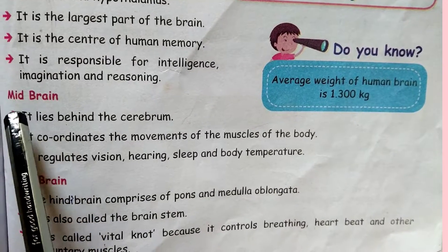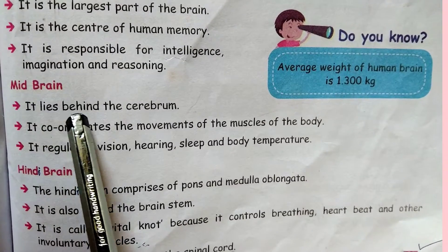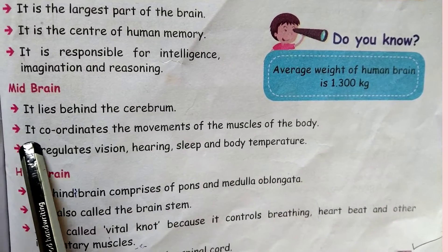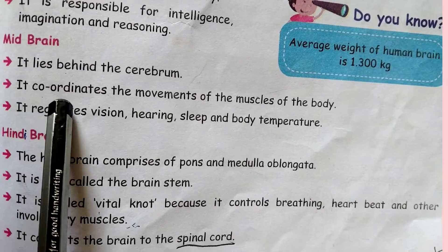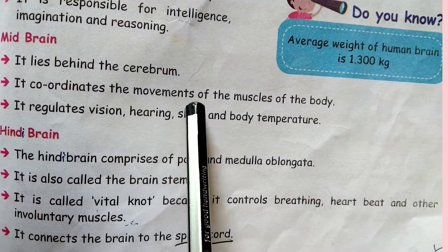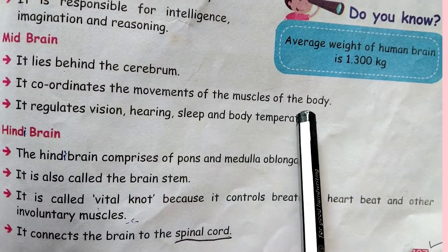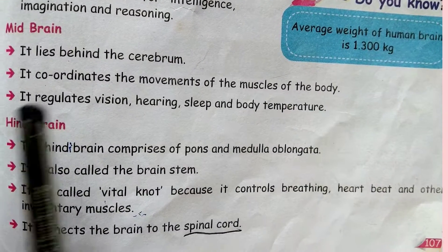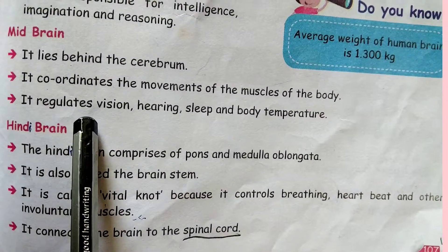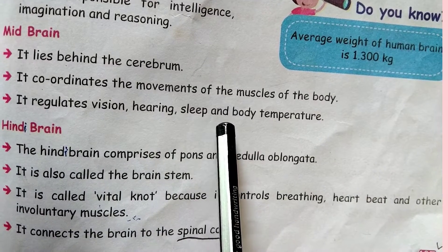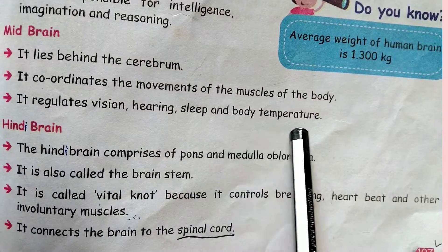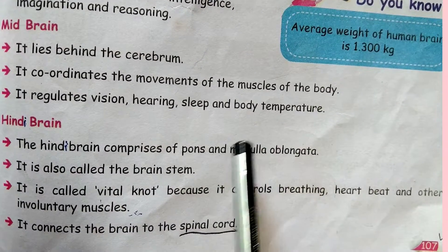Midbrain: It lies behind the cerebrum. It coordinates the movements of the muscles of the body. It regulates vision, hearing, sleep, and body temperature.